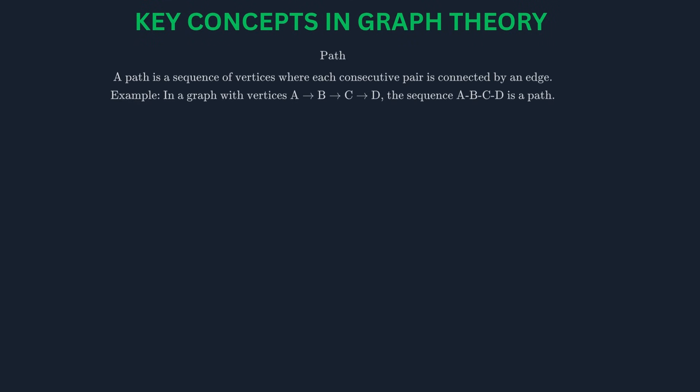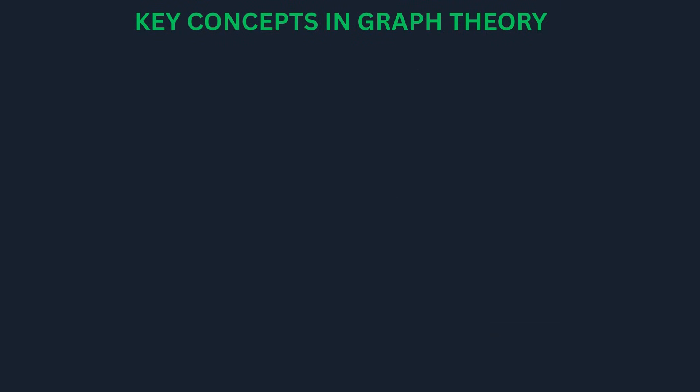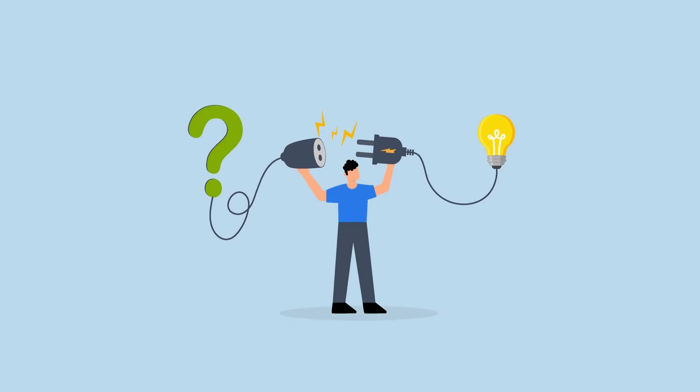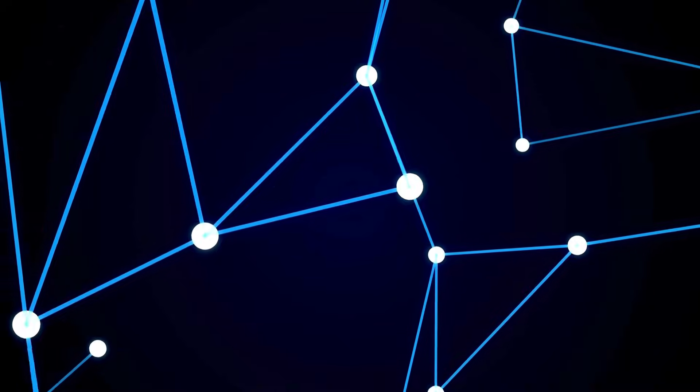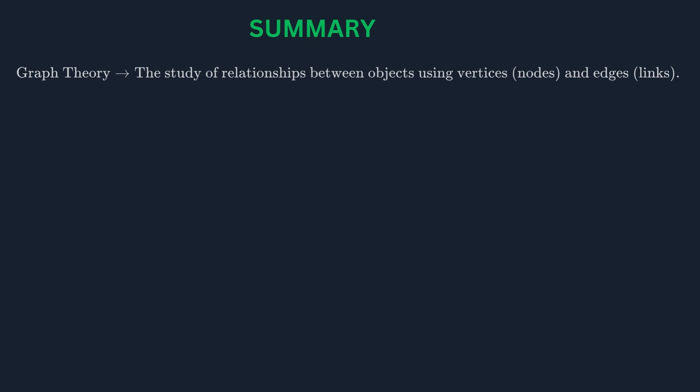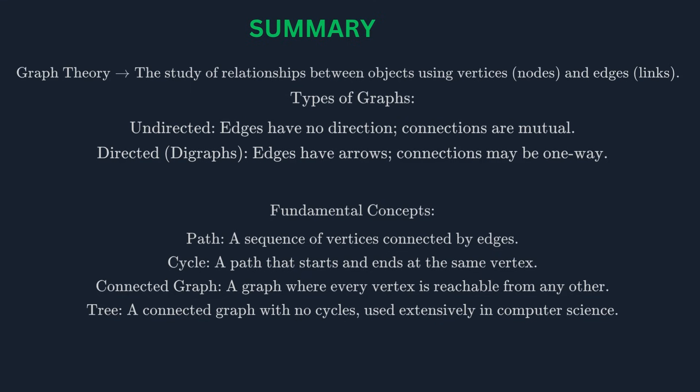There are many important concepts in graph theory. A path is a sequence of vertices connected by edges. A cycle is a path that starts and ends at the same vertex. A graph is connected if there is a path between every pair of vertices. A tree is a special type of graph that is connected and has no cycles. Trees are very important in computer science for organizing data. Graph theory is used to solve a huge variety of problems. Think about Google Maps finding the shortest route between two places—that's a graph problem. The internet itself is a massive graph. To recap: graph theory models relationships between objects using vertices and edges. Graphs can be directed or undirected, and concepts like paths, cycles, and trees are fundamental to understanding their structure. It's a powerful tool for modeling and solving real-world problems.